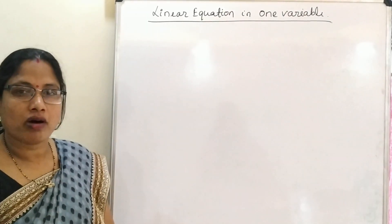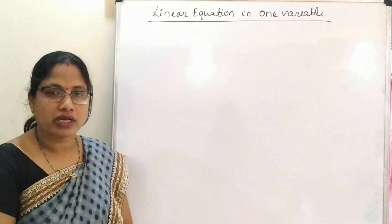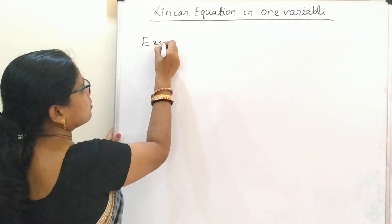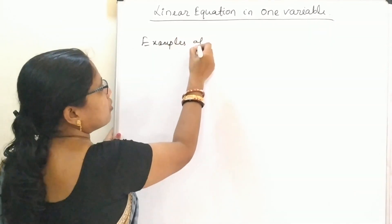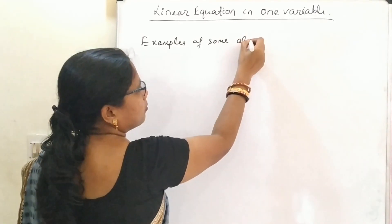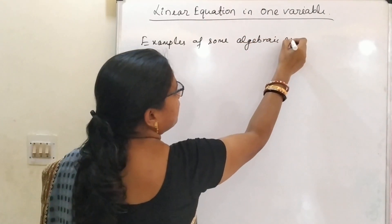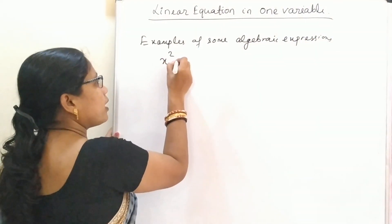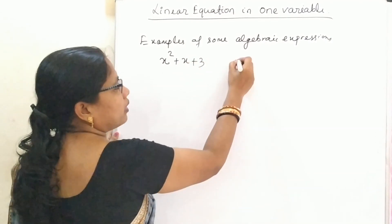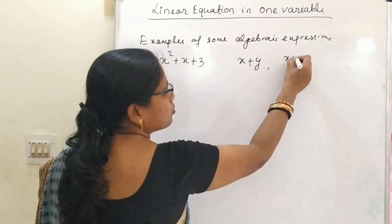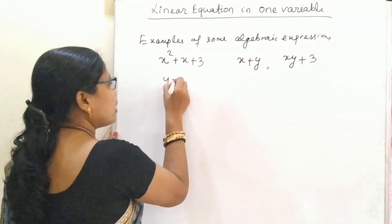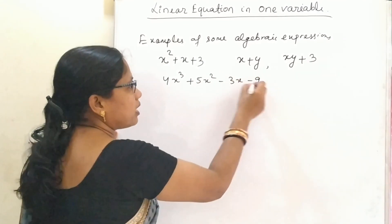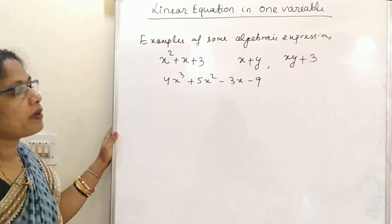So far you have learned about algebraic expressions and some equations. Examples of some algebraic expressions are: x squared plus x plus 3, x plus y, y plus 3, and 4x cubed plus 5x squared minus 3x minus 9. These are all examples of algebraic expressions.